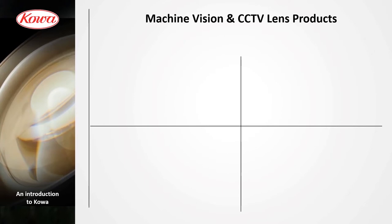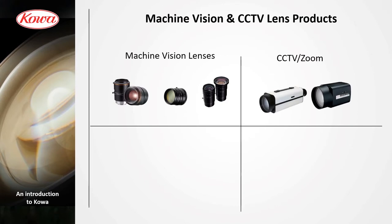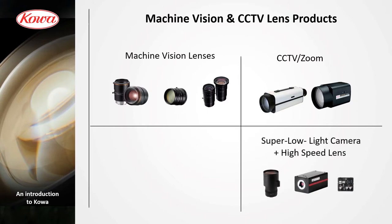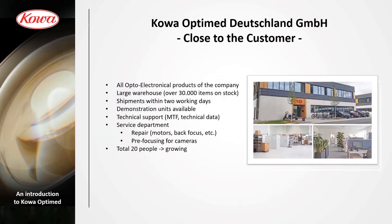Here are some impressions from our factory in Japan. For lenses, we concentrate on two business areas: one is machine vision lenses, which are mostly C-mount lenses with fixed focal lengths. The other area is security, which covers mostly motorized zoom lenses and a low-light camera. For both business areas we offer customized solutions. In Düsseldorf, Germany, we have our sales hub for Europe.